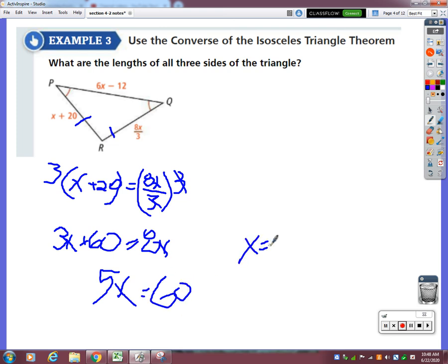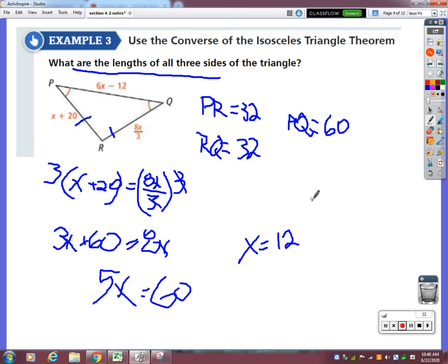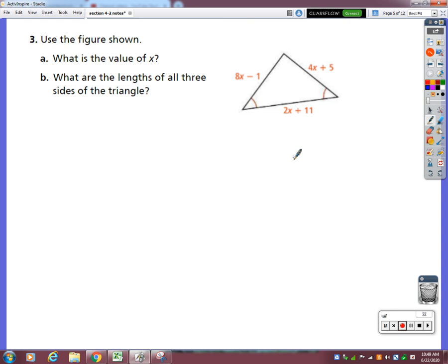So x equals 12. However, that's not what the question asks us for - it says what are the lengths of all three sides. I have to take that and plug it in. If I plug that into this easy one first, then PR has a length of 32. I could be lazy and assume that RQ is going to have the same length, but I might as well check my work. If I plug 12 into there, 8 times 12 is 96, and 96 divided by 3 is in fact 32 as we were hoping for. And then side PQ has no relationship to the lengths of those sides - I have to plug that in and that would give me 17.